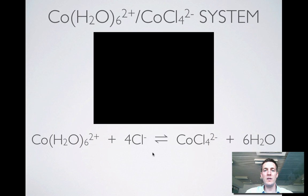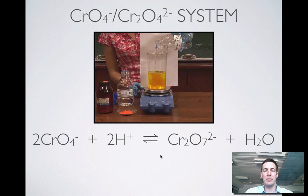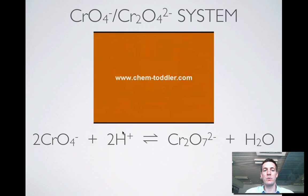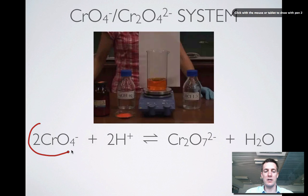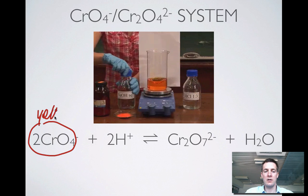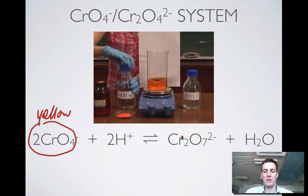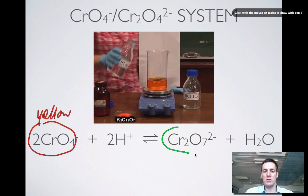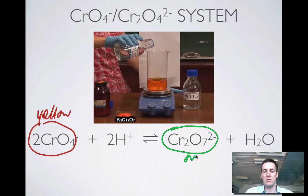The last system actually talks about what happens when we add and remove something in a slightly different way. So this is the chromate and dichromate system. And in this case, we've got a yellow ion and an orange one. We can see the orange one there at the moment.